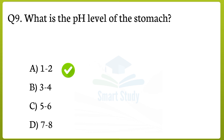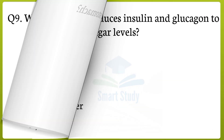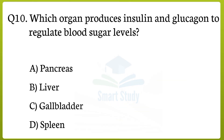Question number 10. Which organ produces insulin and glucagon to regulate blood sugar levels? The correct answer to that question is option A: Pancreas.